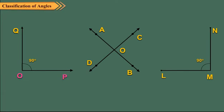Here the rays OP and OQ form an angle of 90 degrees. So we say ray OP and ray OQ are perpendicular to each other.